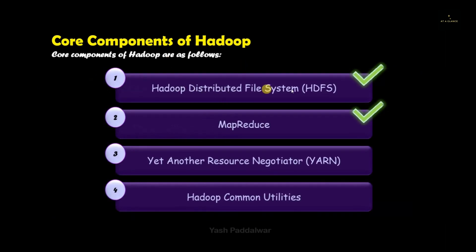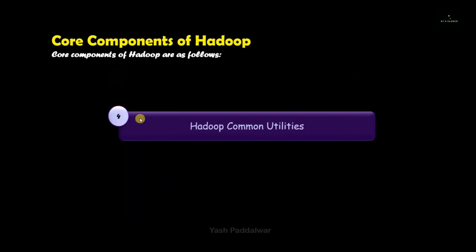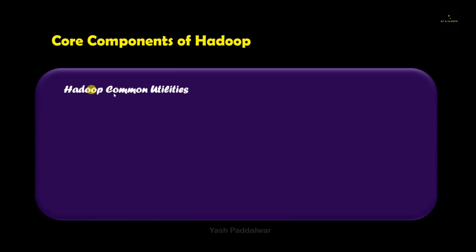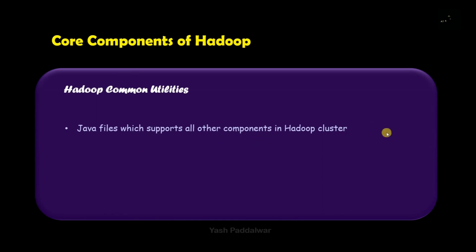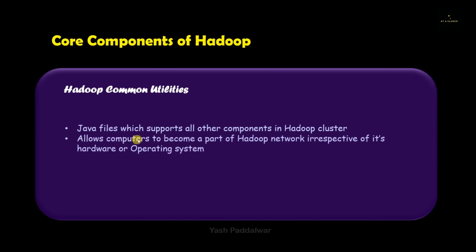We are now done with the third component of Hadoop, which is YARN. Now it's time to move on to the fourth component, which is Hadoop Common Utilities. These are Java files that support all the other components present inside the Hadoop clusters. It is written in Java and can be a file or a group of libraries that supports all components inside the Hadoop cluster. It also allows computers to become part of the Hadoop network irrespective of the hardware or operating system, making it very convenient for any computer to join the Hadoop network.